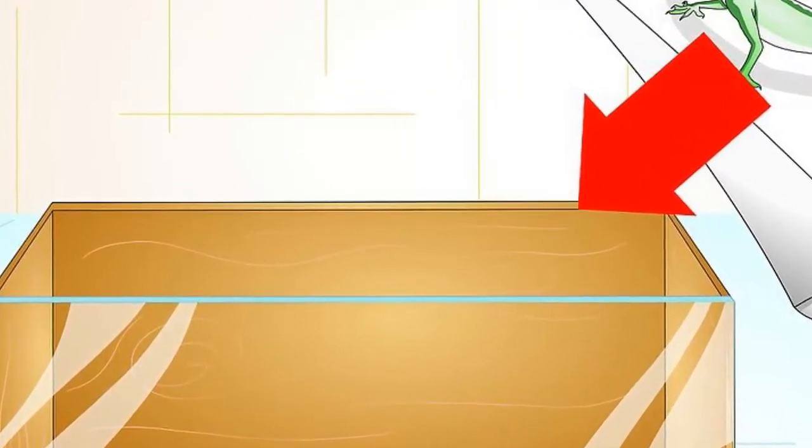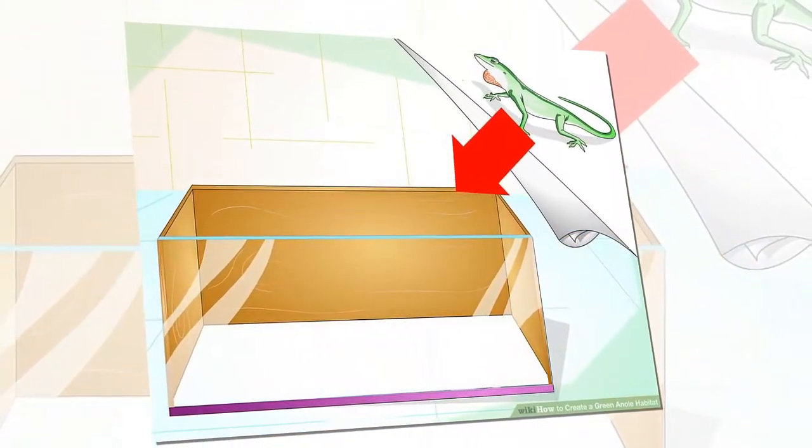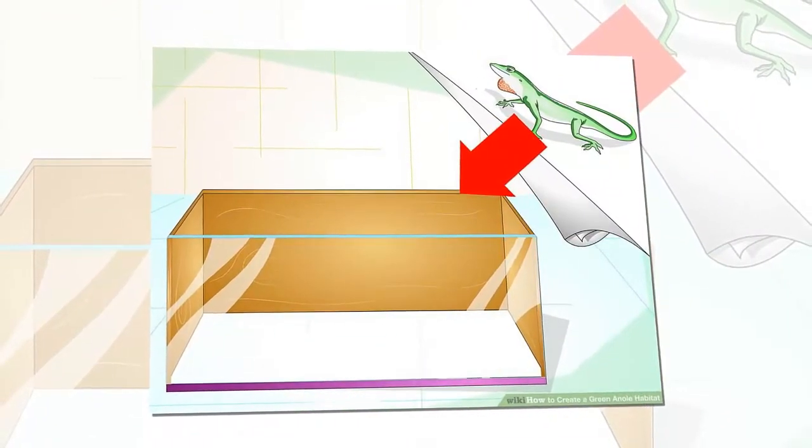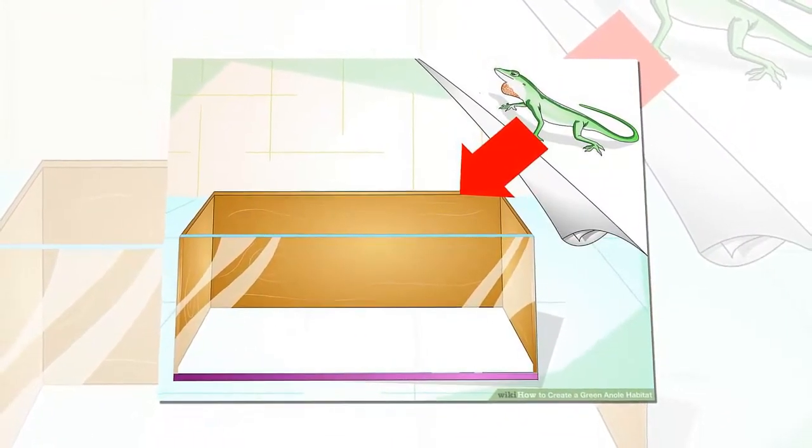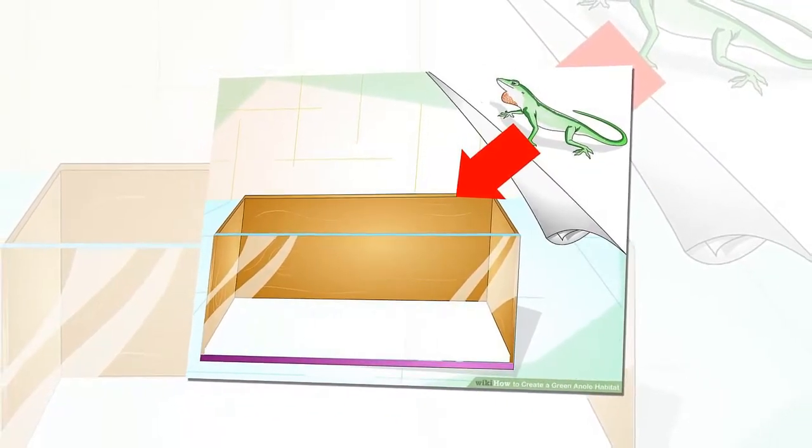Anoles can be kept alone or in groups of one male and a number of females. A 10-gallon vivarium is big enough for two anoles. If you have two or more male anoles, they may fight. If you have one male and two or three females, you should get a 20-gallon vivarium or tank, approximately 48 inches by 13 inches by 20 inches.